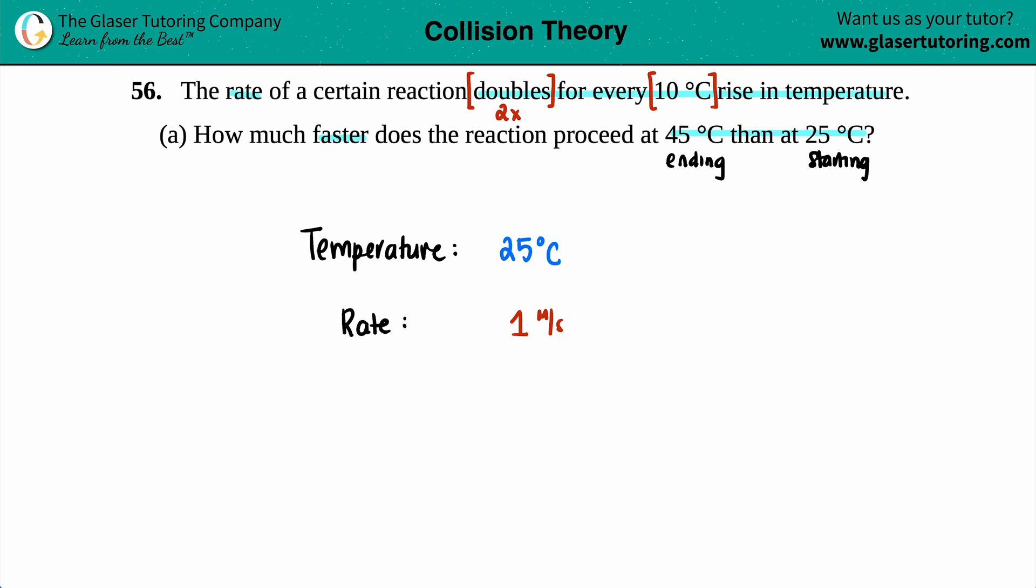Now we know that the rate will double, so go up by two times, every 10 degrees rise in temperature. So the first 10 degrees rise in temperature is going to be 25 to 35 degrees Celsius. We're going to add 10 degrees and what's going to happen to our reaction? It's going to double. That literally means times by two. So if I take my one and I times it by two, I get two molarity per second.